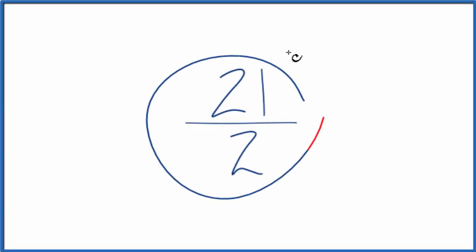Let's simplify the fraction 21 over 2. You can also call this 21 halves. What we want to do is find another fraction that's equivalent to 21 over 2. It has the same value, just that we simplified or reduced it to lowest terms.